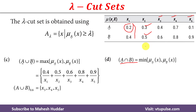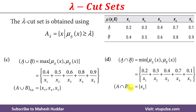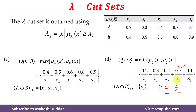Once we calculate the intersection of fuzzy sets A and B, next we find the lambda cut set with lambda equal to 0.5. The lambda cut set contains all elements whose membership value is greater than or equal to 0.5. Comparing all membership values, 0.7 is the only membership value greater than 0.5, hence x4 is the only element in the lambda cut set of the intersection of the two fuzzy sets.